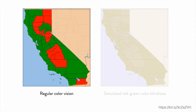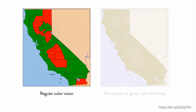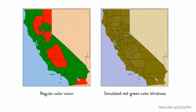For example, here's a map that I found online that shows how certain counties in California voted in some referendum. The person who designed the map chose red and green to differentiate how each county voted, as you see on the left. On the right, you see what a colorblind user sees — the red and green counties both appear in the exact same shade of green.